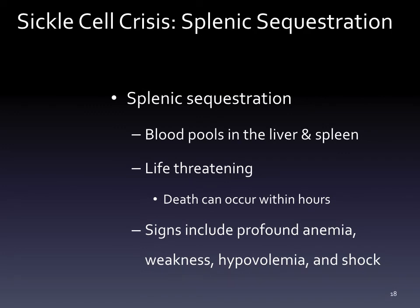One of the most concerning complications of vaso-occlusive thrombotic crisis is splenic sequestration, where blood pools in the liver and spleen, leaving not enough blood in the rest of the circulation. This is a life-threatening condition where death can occur within hours. Signs include profound anemia followed by weakness, hypovolemia, and shock. Any child with sickle cell in crisis presenting with shock symptoms must be evaluated immediately for splenic sequestration.